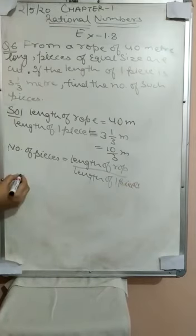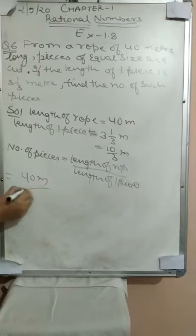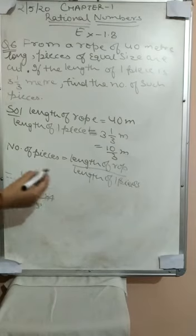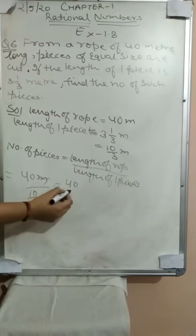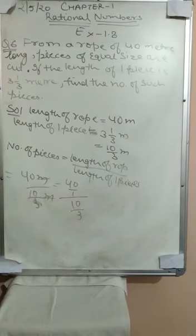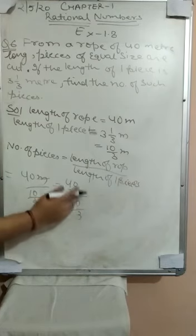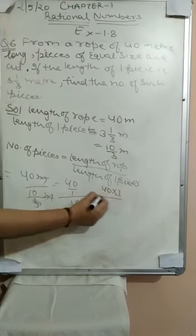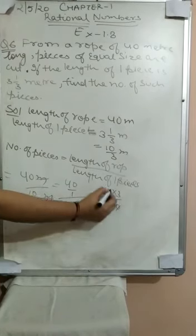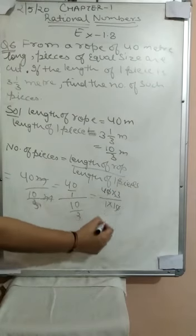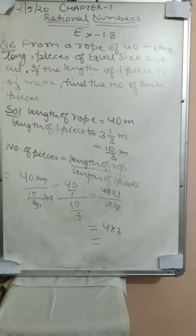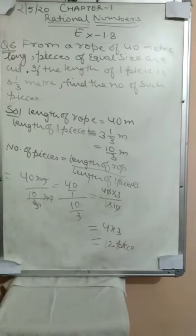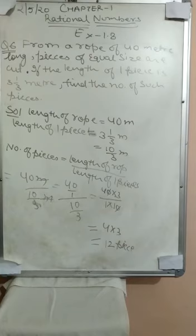So we calculate 40 divided by 10/3. The meters cancel. We get 40/1 divided by 10/3. We interchange: 40 multiplied by 3, over 1 multiplied by 10. The zeros cancel — 4 into 3 is 12. So there are 12 pieces. Therefore, the number of pieces cut from the 40-meter long rope is 12.